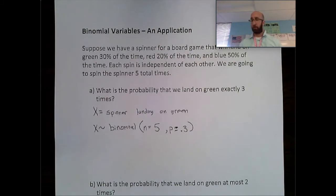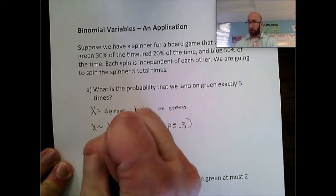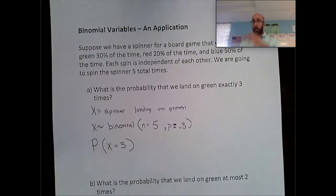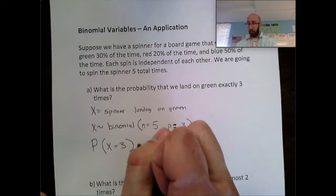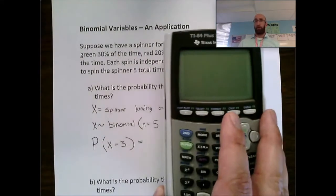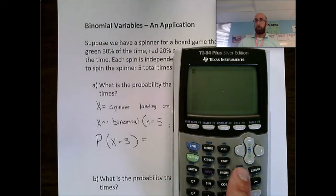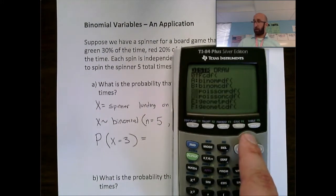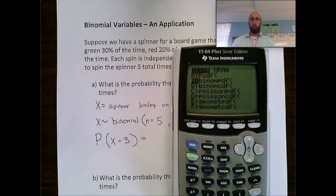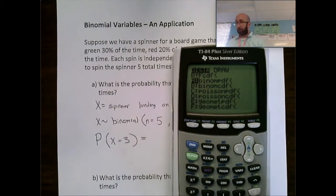Now let's answer the question: what is the probability that we land on green exactly three times? We want P(X = 3). We have options in the calculator — binomial PDFs and binomial CDFs. Go to second distributions and scroll to the bottom. When we have an x equals situation, we use a PDF. If it's an inequality, that's when we use a CDF. So we're going to use the PDF.